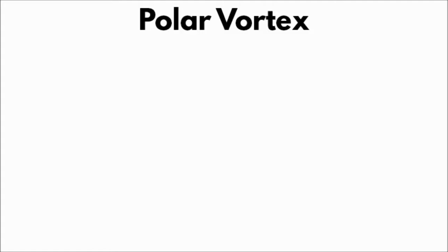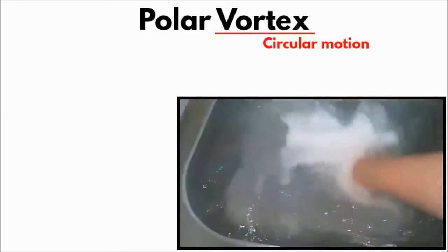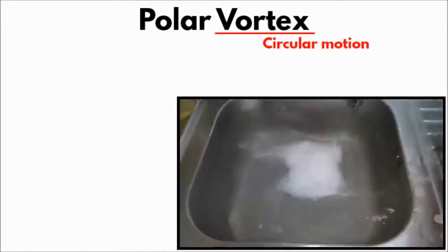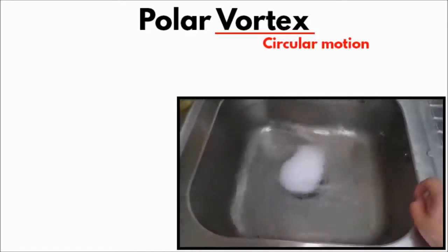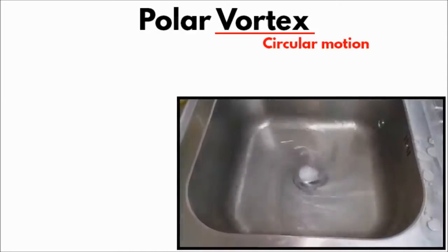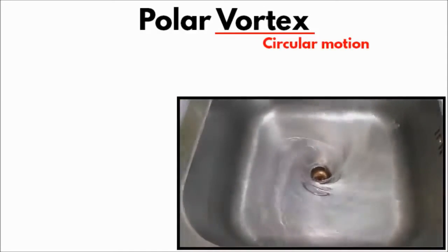When you look at the term polar vortex, let's break the words and try to understand each one of them. Vortex means something which moves in a circular motion. For example, when you try to spin the water in a bucket, it moves in a circular motion. This kind of movement is also true with air and wind. It is this circular movement which is known as a vortex.